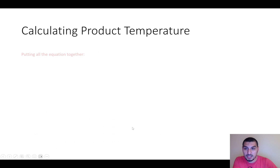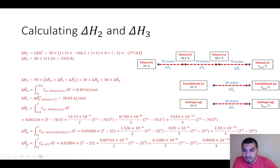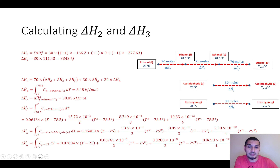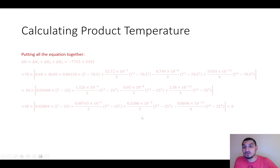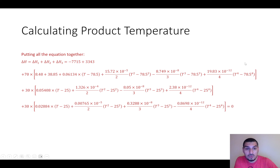Because we don't know the product temperature, we cannot simply look up values from table B8 as before — we must use the heat capacity constants and express the integrals as functions of T. When combining all terms, T appears with powers one through four for each of the three product components, giving T appearing 12 times total with different powers.